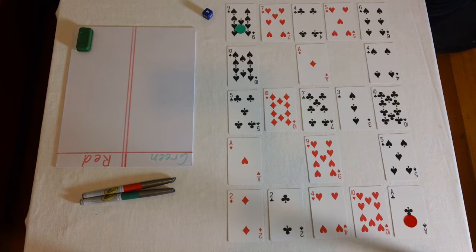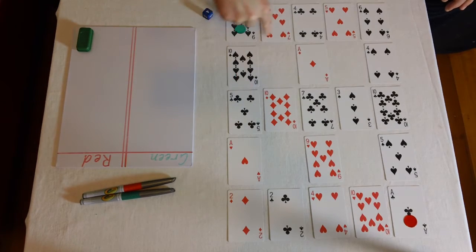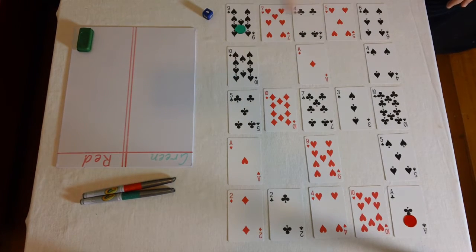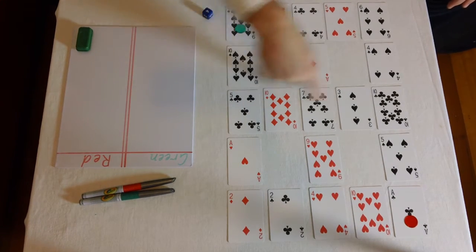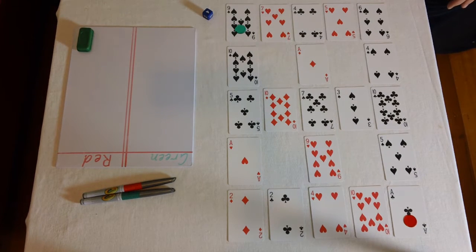Now the first thing you'll need to do is remove all the jacks, queens, kings and jokers from your deck. Once you've shuffled your cards, you need to place them down in this formation, face up. So it's just five across, five down the side and with a cross section in the middle.